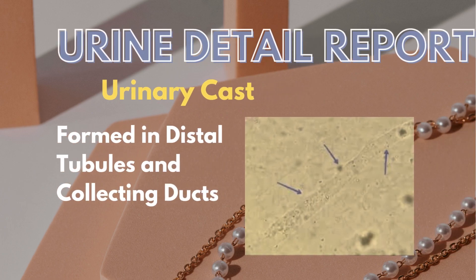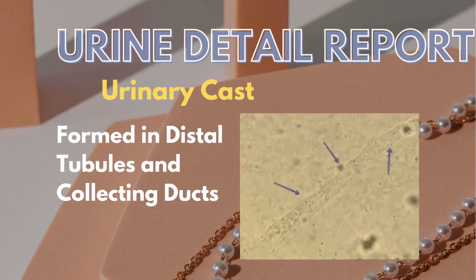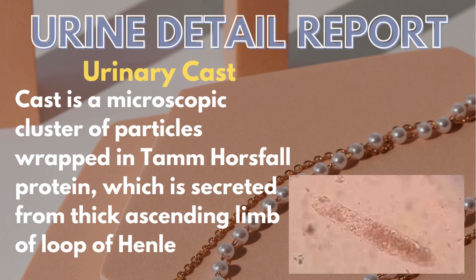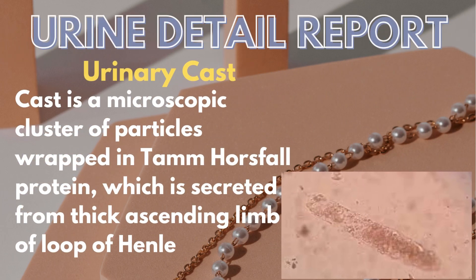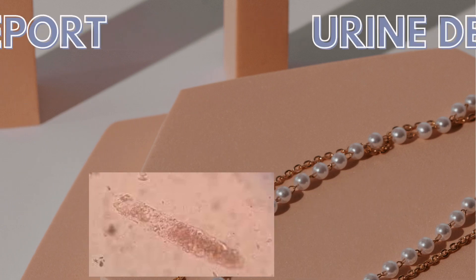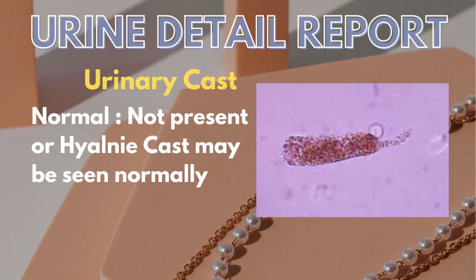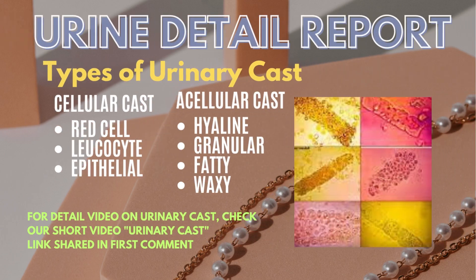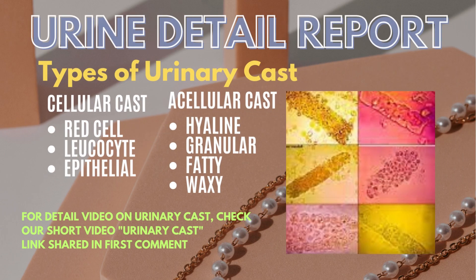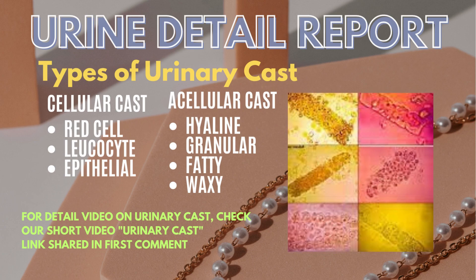Lastly comes the cast, which is formed in distal tubules and collecting ducts. It is a microscopic cluster of particles wrapped in a Tamm-Horsfall protein matrix, a protein secreted by the thick ascending limb of the loop of Henle. Normally it may not be present, or sometimes hyaline cast may be seen in normal urine. There are different types of urinary cast, broadly divided in two categories: first is cellular cast, that includes red cell, leukocyte, and epithelial cast; second is acellular cast, that includes hyaline, granular, fatty, and waxy cast.